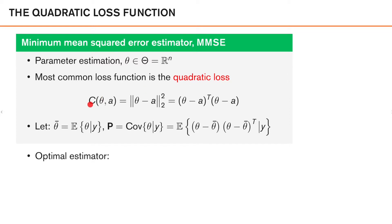The quadratic loss can be expressed as follows. We have a loss function c of theta and a, which is equal to the L2 norm of theta minus a, squared. This can be viewed as the square error between the actual theta and our decision a. As theta is a column vector, we can write this norm as (theta minus a) transposed times (theta minus a), which gives a scalar — as expected for a cost function.